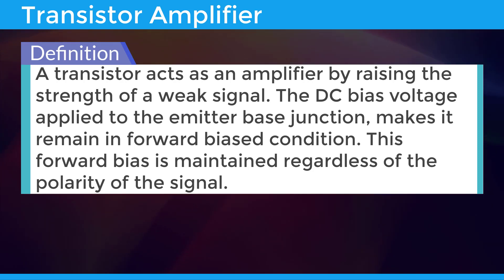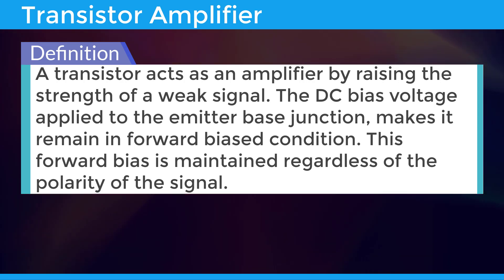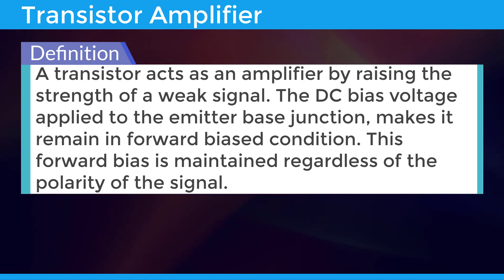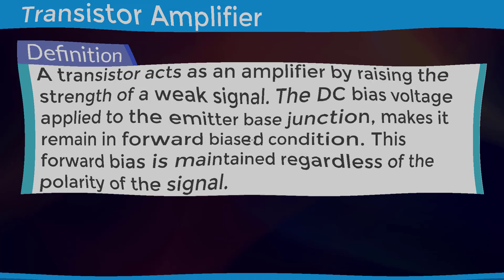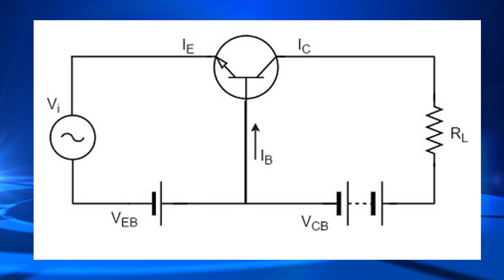The DC bias voltage applied to the emitter-base junction makes it remain in forward biased condition. This forward bias is maintained regardless of the polarity of the signal. The figure shows how a transistor looks like when connected as an amplifier.